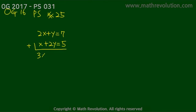Now let's take a look at official guide 2016 PS 25. From the question you can see that 2x plus y equals 7 and x plus 2y equals 5. Then adding these two equations together you get 3x plus 3y equals 12.